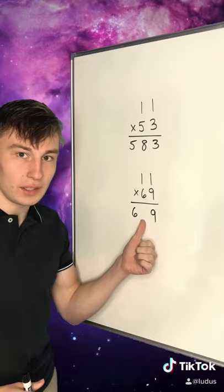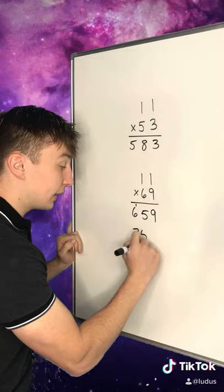So what you do is you put the 5 here and the 1 goes here. So 11 times 69 is 759.